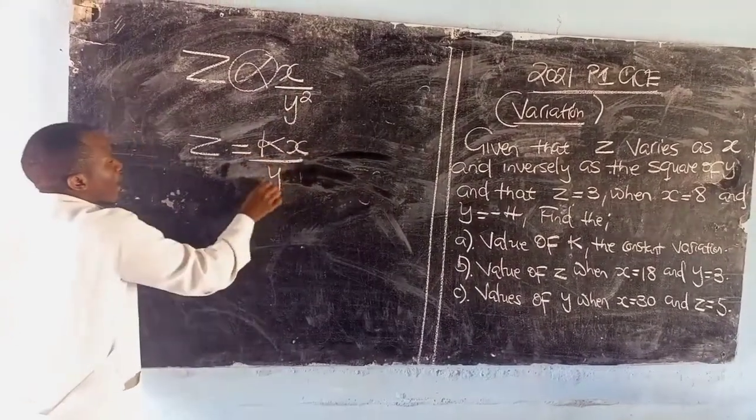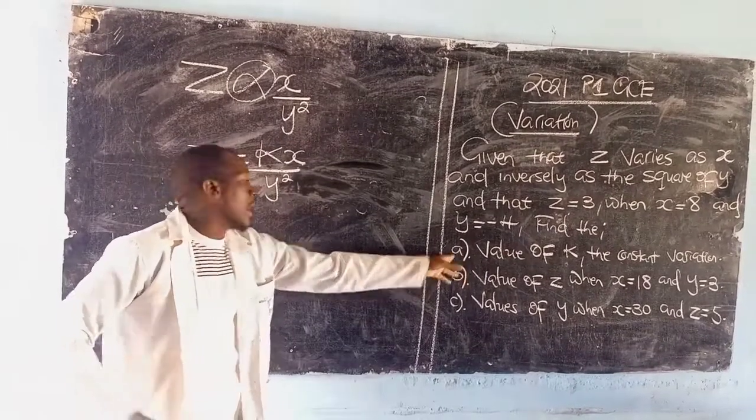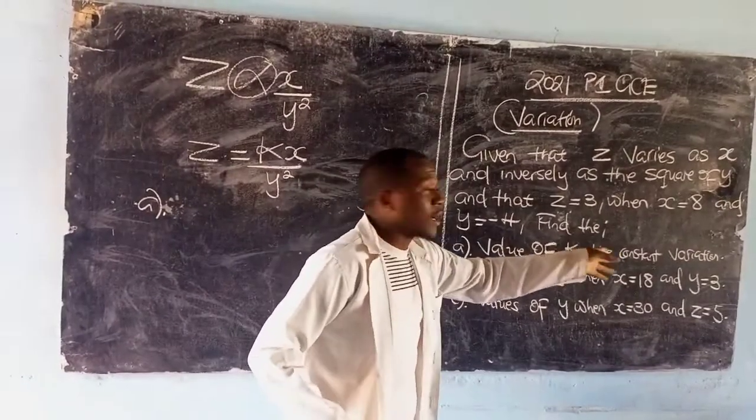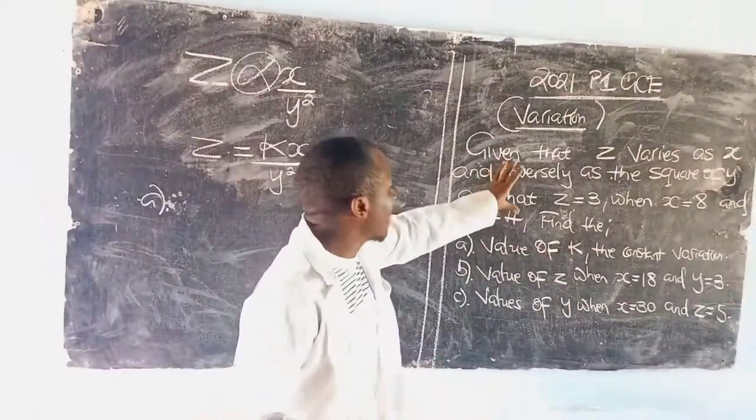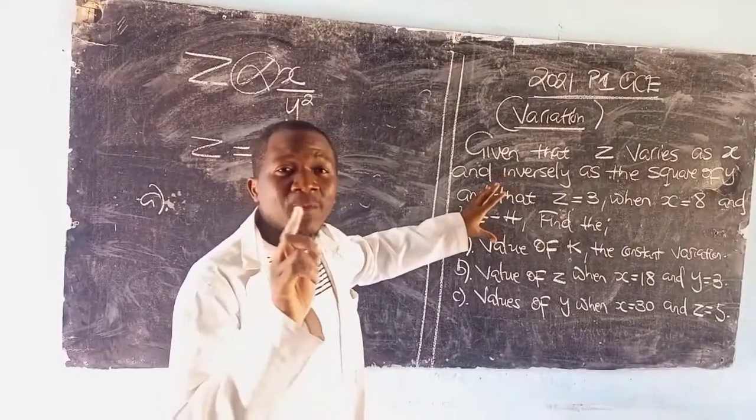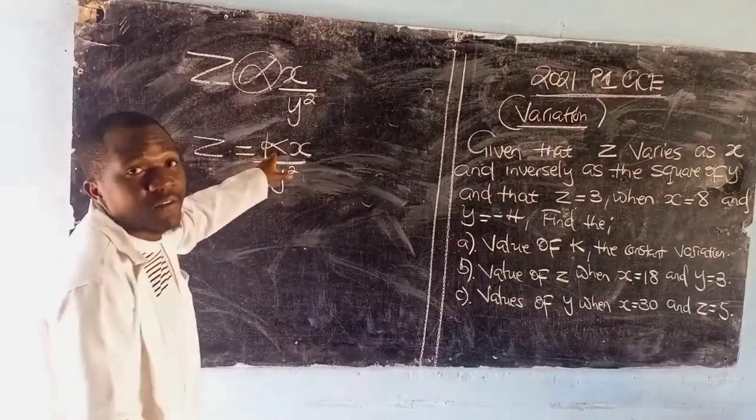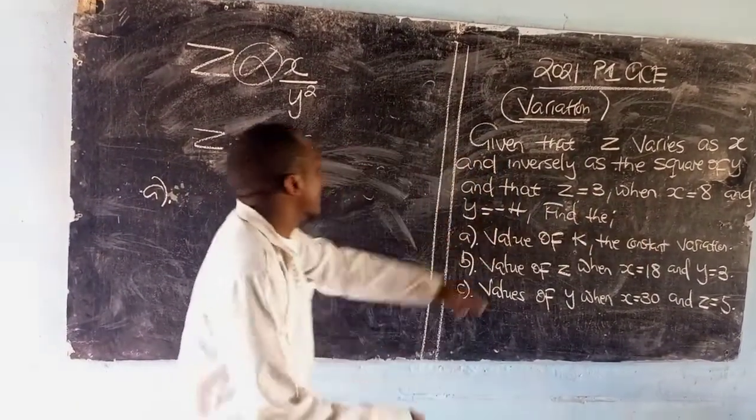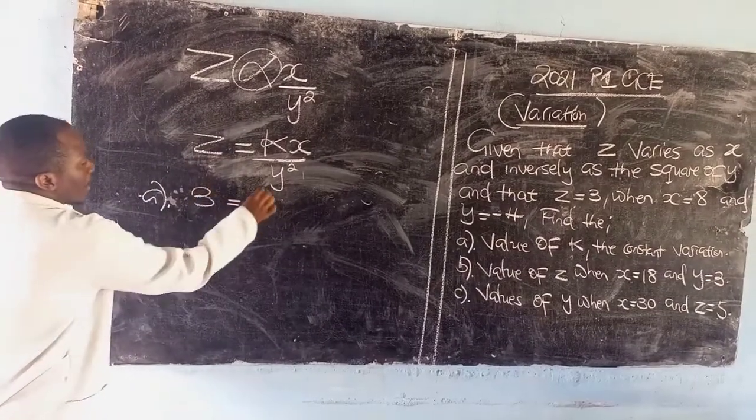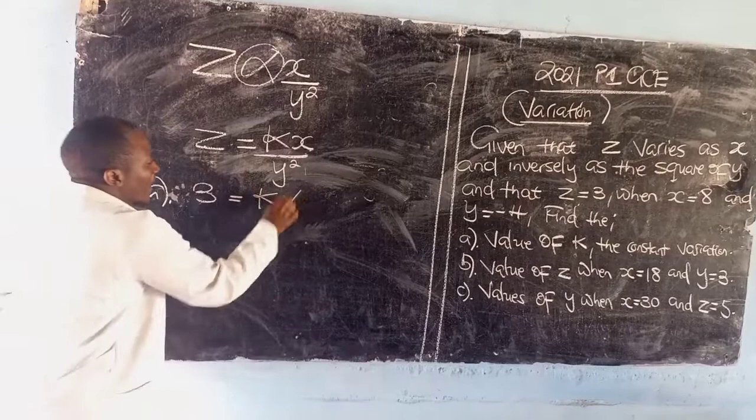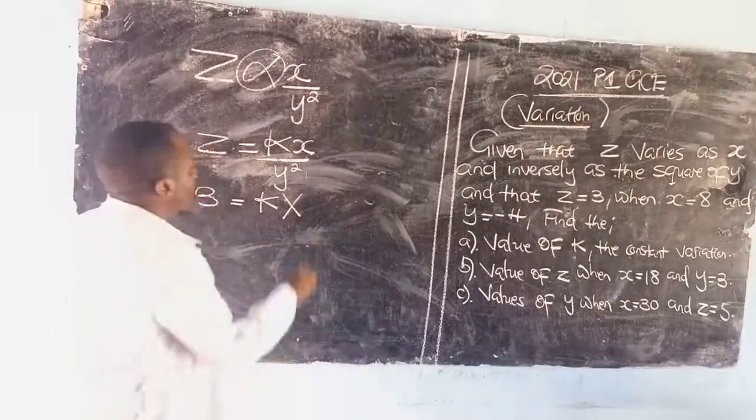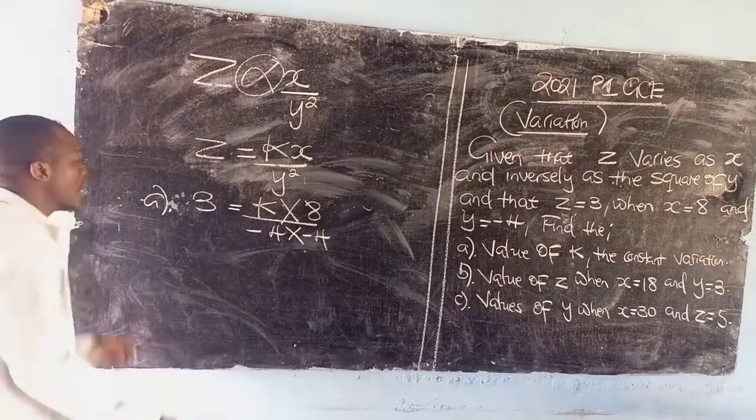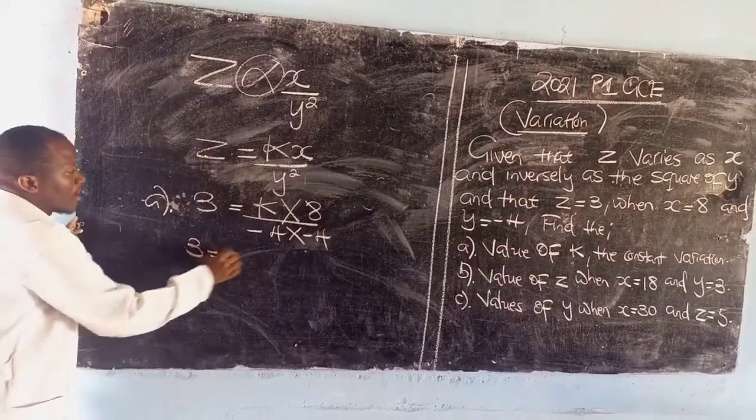k will mean this is the actual letter connecting z, x, and y. So we are going to say k times x over y squared. Now we can answer for k. They are trying to say find the value of k, the constant variation. Remember the first and foremost values that are given are best used to help out in finding the value of k. So z is 3, x is 8, and y is negative 4.